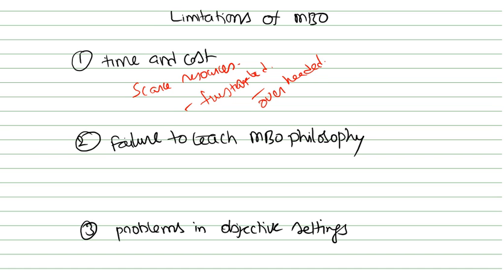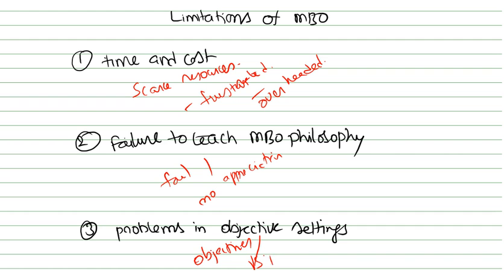A manager can fail to understand and appreciate this new approach. If he doesn't understand what is in it, how can he work according to the given instructions? The next limitation is problems in objective setting. MBO requires verifiable objectives against performance, but these objectives tend to be in the form of statements rather than quantitative form — they are not in quantitative form.